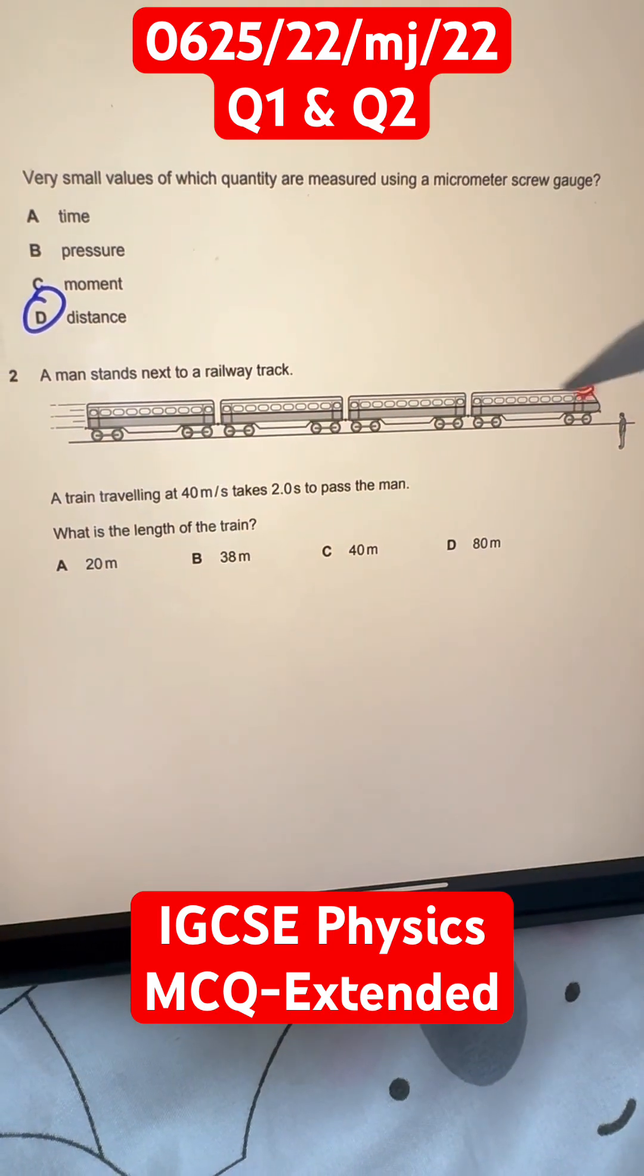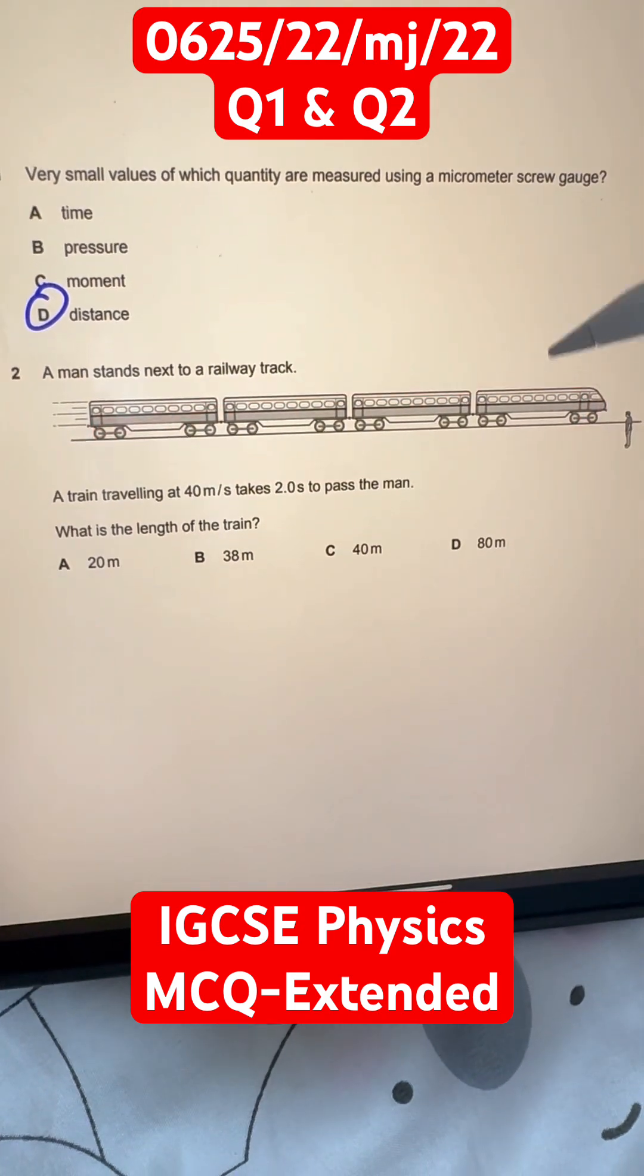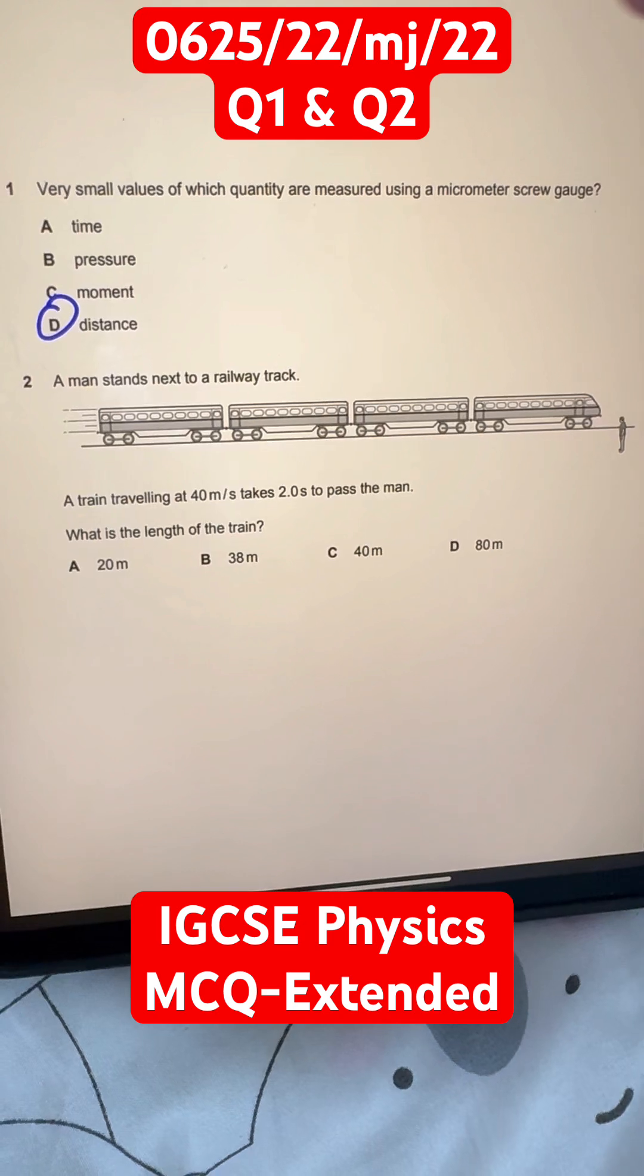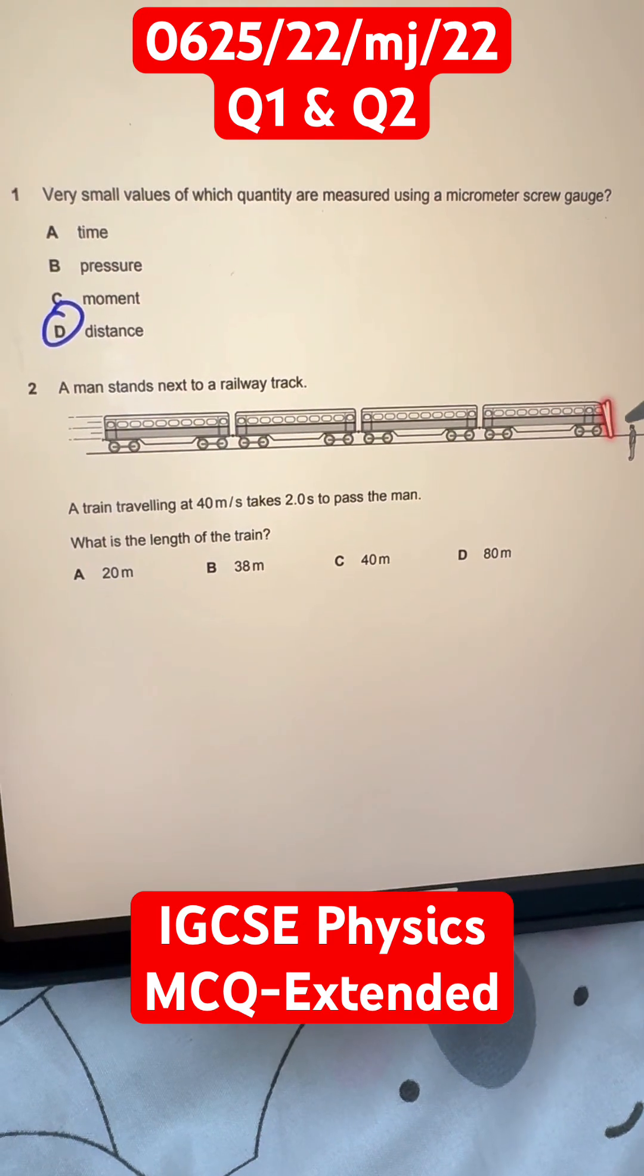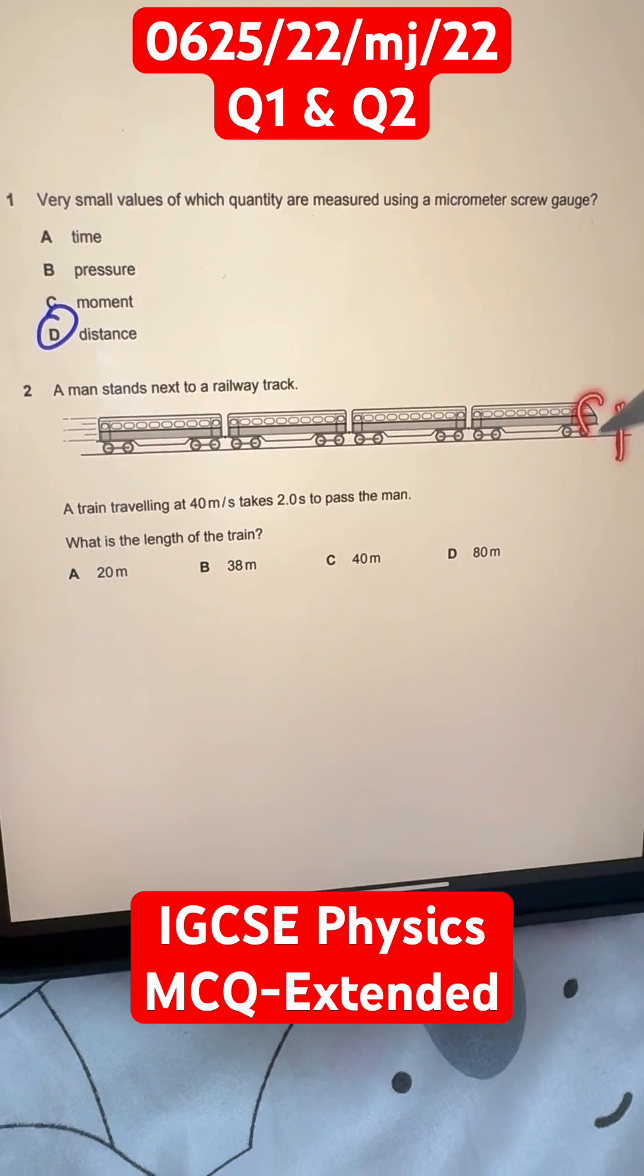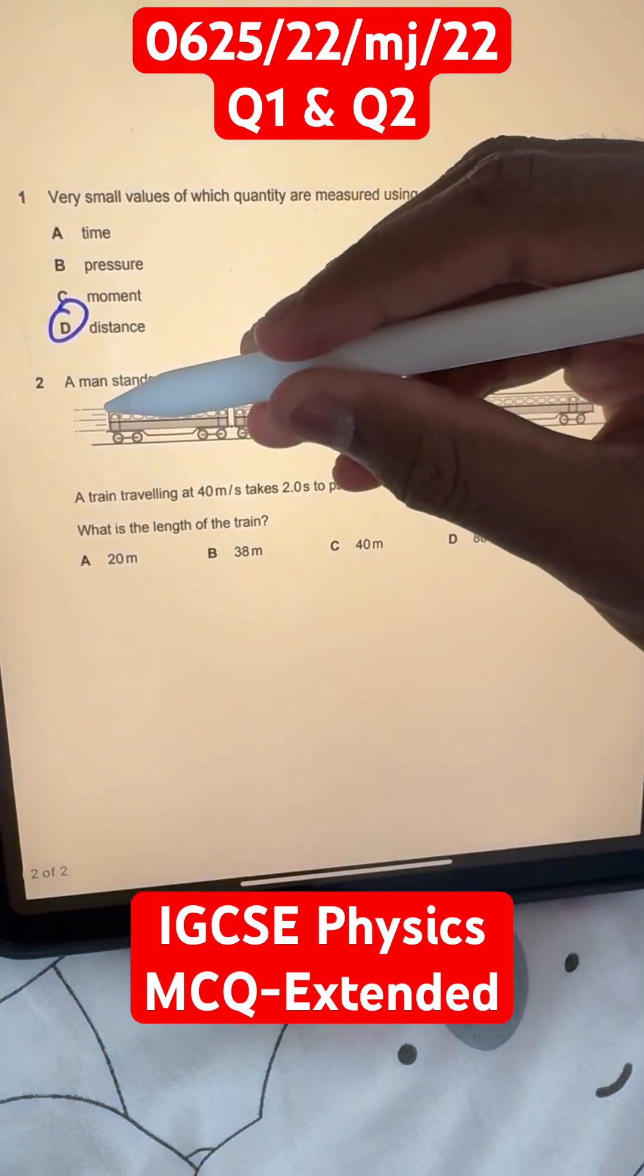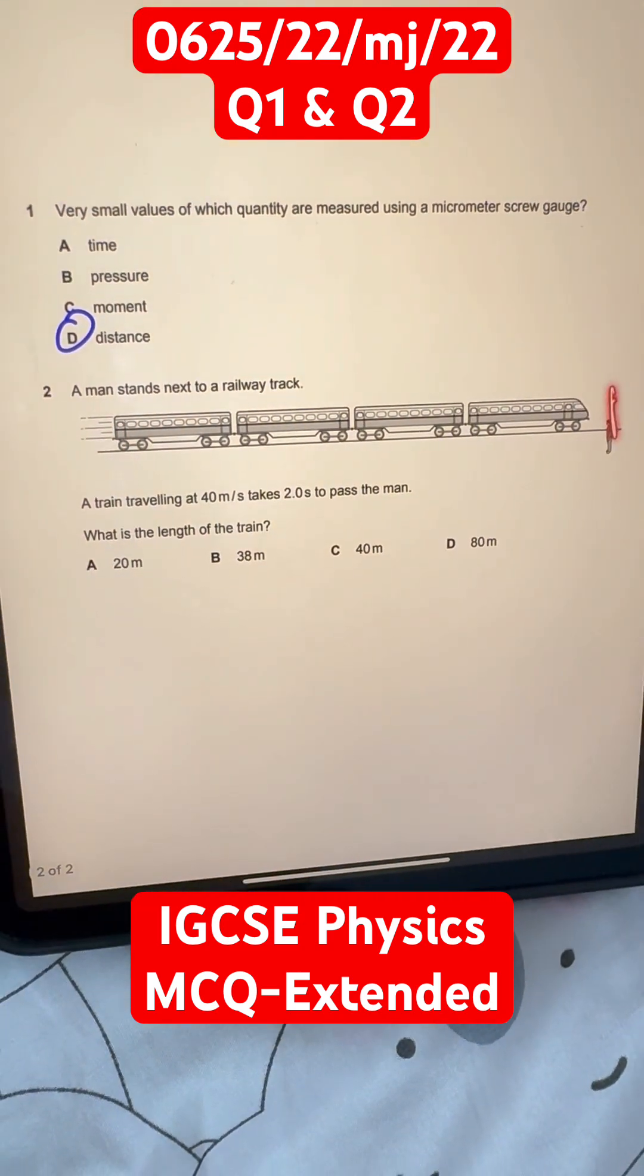Well, in this case, the length of the train is basically going to be the distance that this train travels in this time. Why? Because at the start, the train is where the man is, and this is the train's start. But then, once it passes the man, the end of the train will be where the man is.